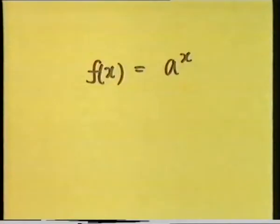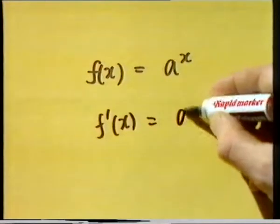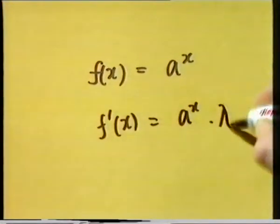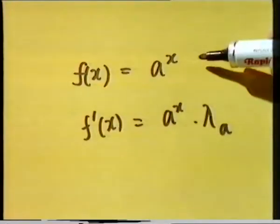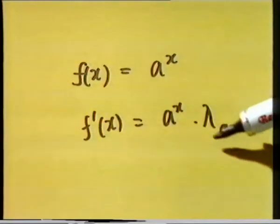Now let's do some calculus with these very important functions, a to the x and log to the base a of x. We'll begin by looking at a to the x. The derivative of a to the x is given by f prime of x equals a to the x times lambda subscript a. Lambda a is just some number, and the important thing is that the derived function is very much like the original function — the only difference is that it gets multiplied by this factor, lambda a.